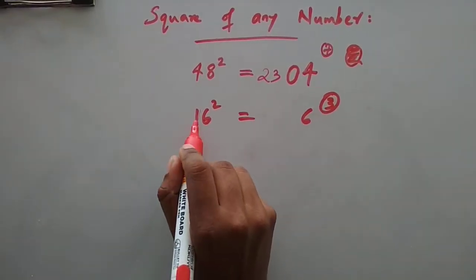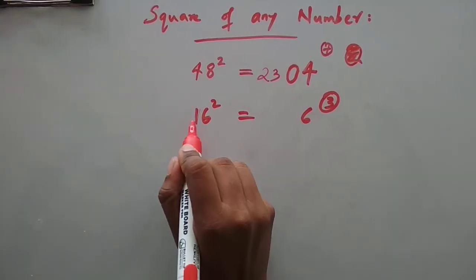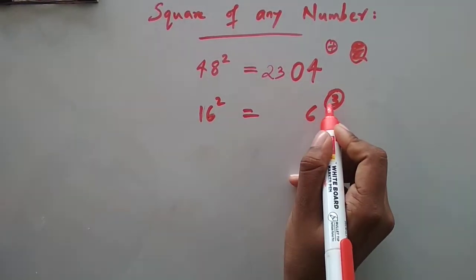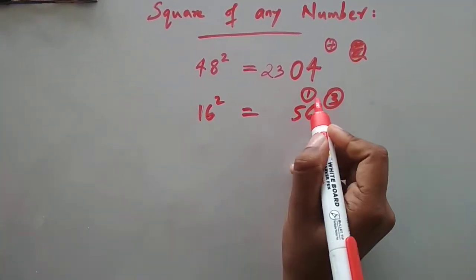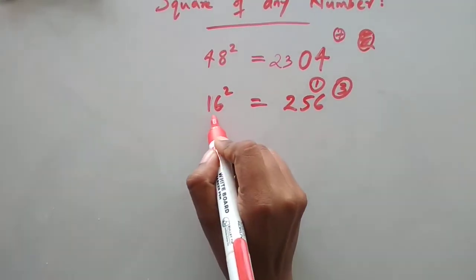Smaller number is 1, we will double it, it will be 2. 2 into 6 is 12. 12 plus 3 is 15. 1 I have kept here. 1 square is 1, plus 1 is 2. So 16 square is 256.